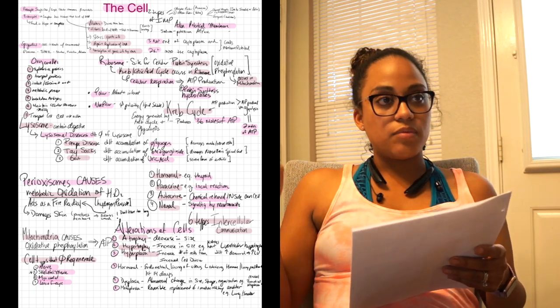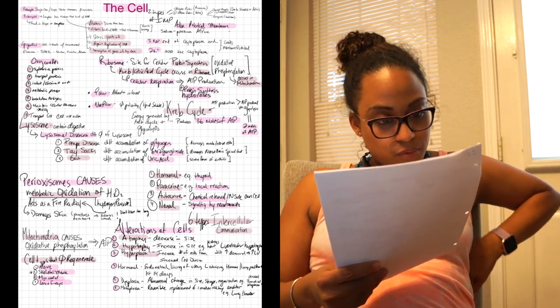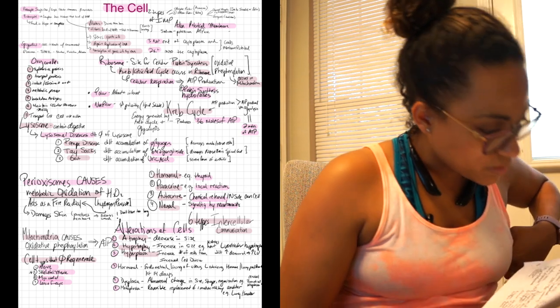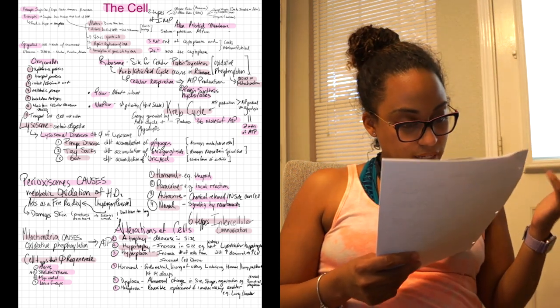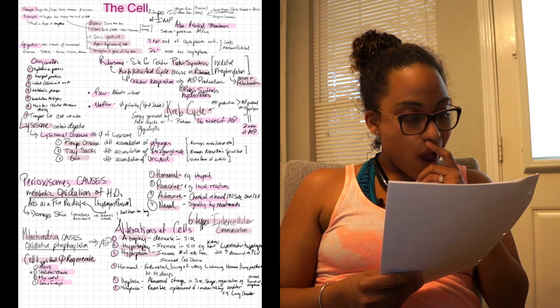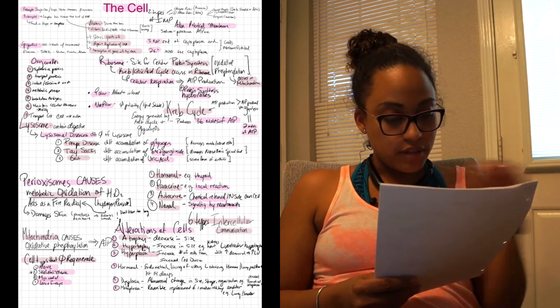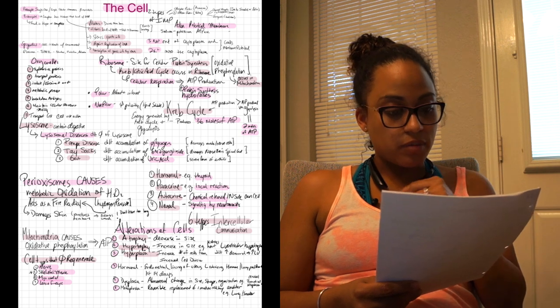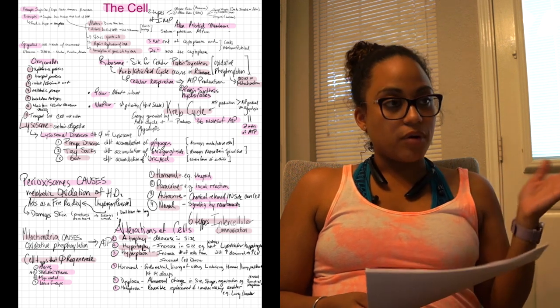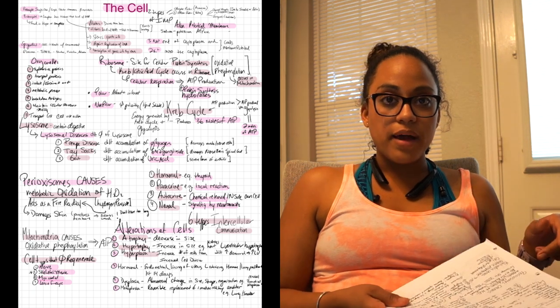So organelles synthesize proteins, transport proteins, isolate and eliminate waste, involved in metabolic processes, breakdown of antigens, maintain cellular structure and motility. Polar attracts, non-polar does not attract, it's lipid soluble and that has to do with your cell membrane. You have a lipid bilayer.